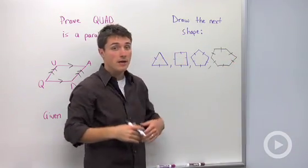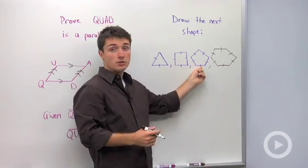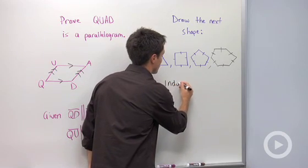Here, you didn't have a given statement and you didn't prove anything. You just saw the pattern and reached a conclusion about what the next shape would be. This is inductive reasoning.